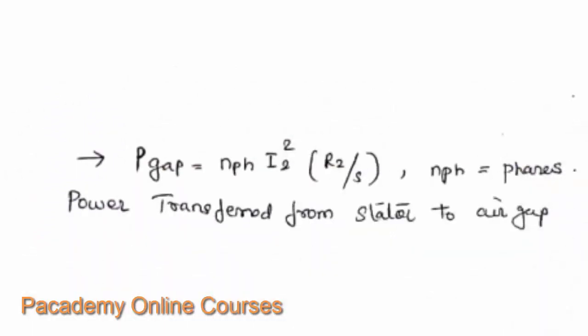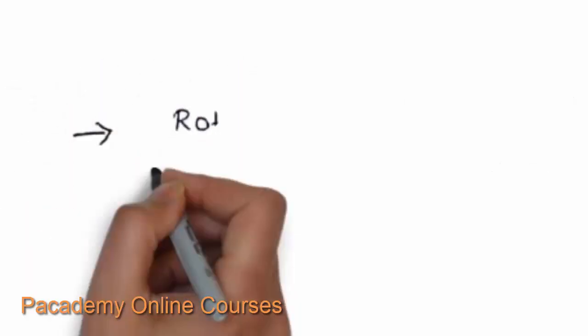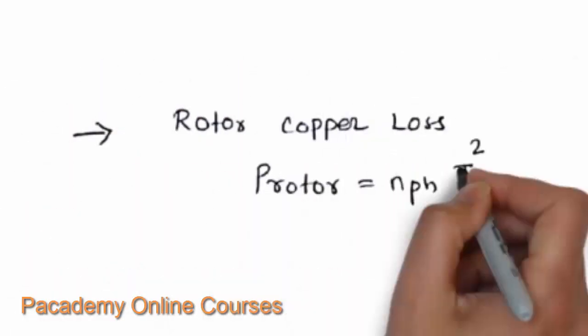The power transferred across the air gap — the power produced in the stator that is now available at the rotor — can be written as i2² × r2/s. That is the rotor current squared multiplied by the rotor resistance divided by slip, per phase. Multiplying by the number of phases (three for a three-phase machine) gives the total air gap power.